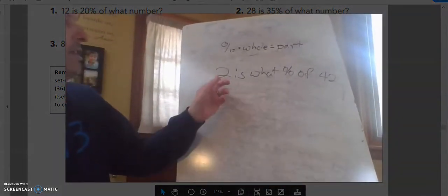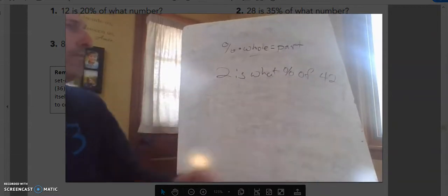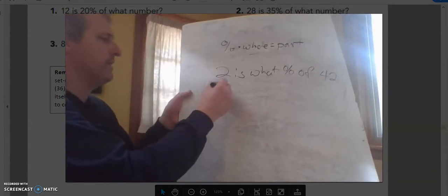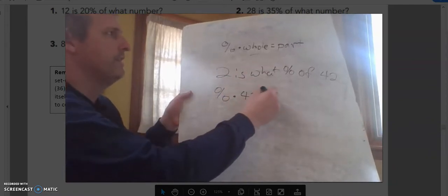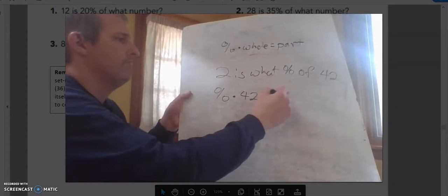What we don't know is our percent. So we're going to put percent times our whole, which is 42, equals our part, which is 2.